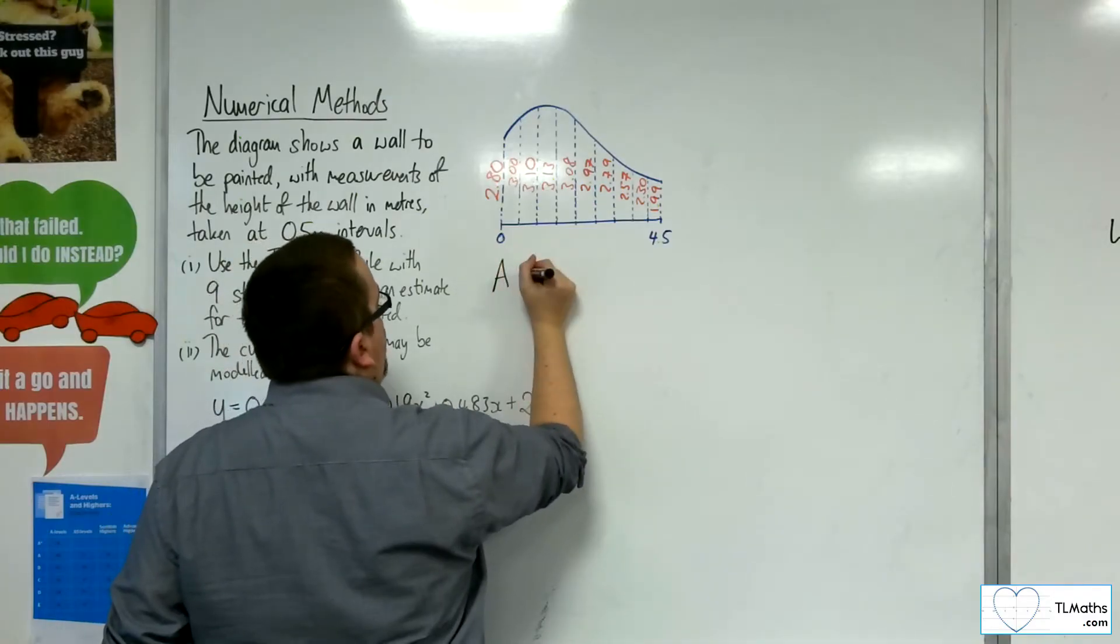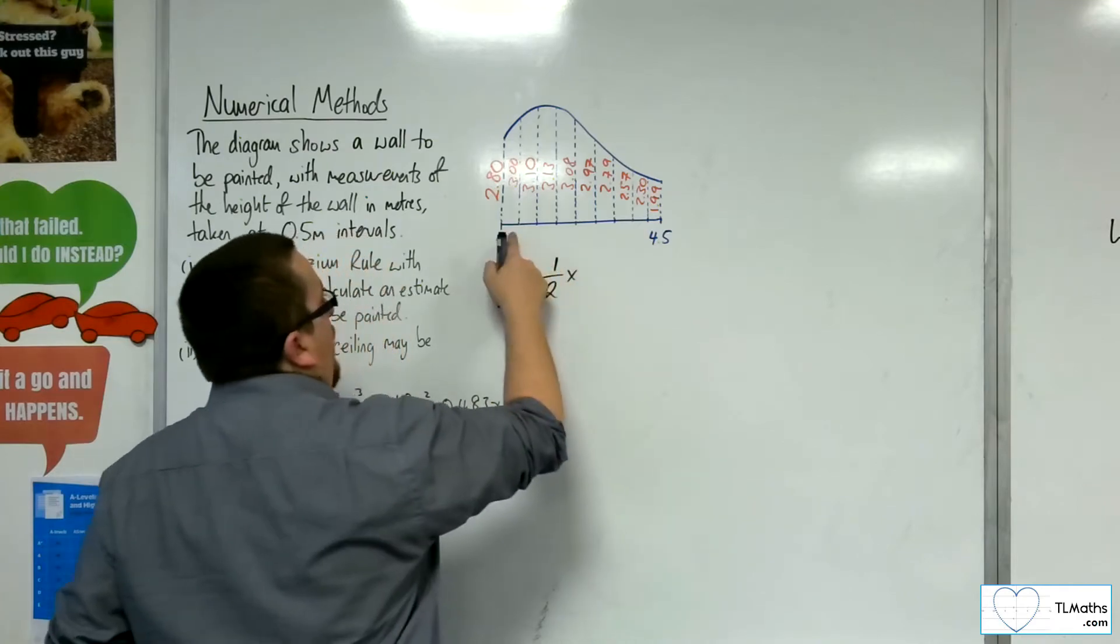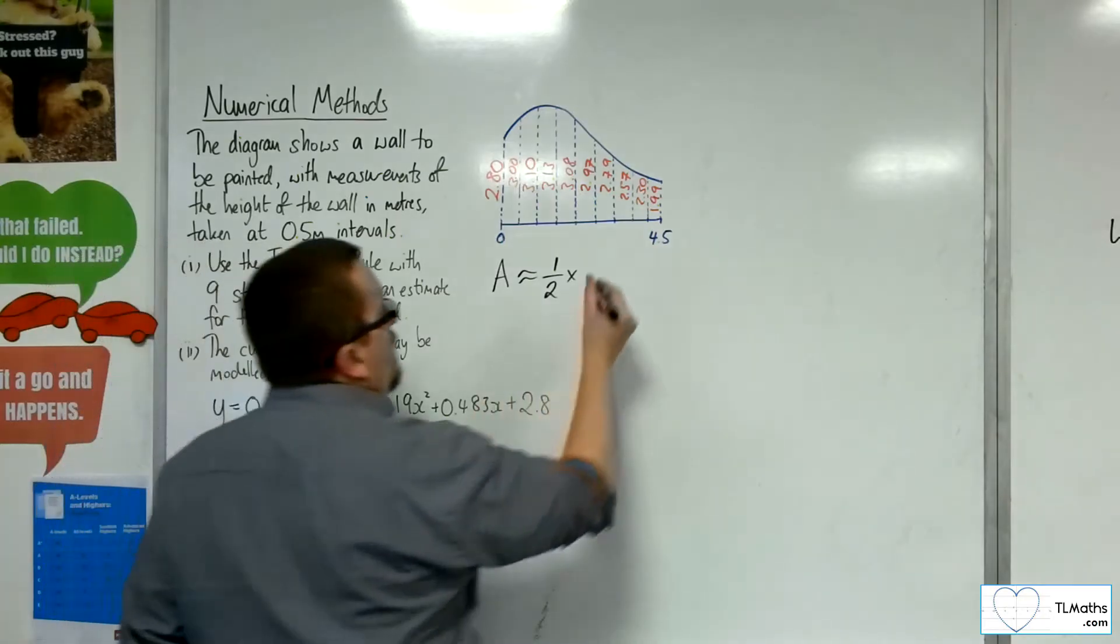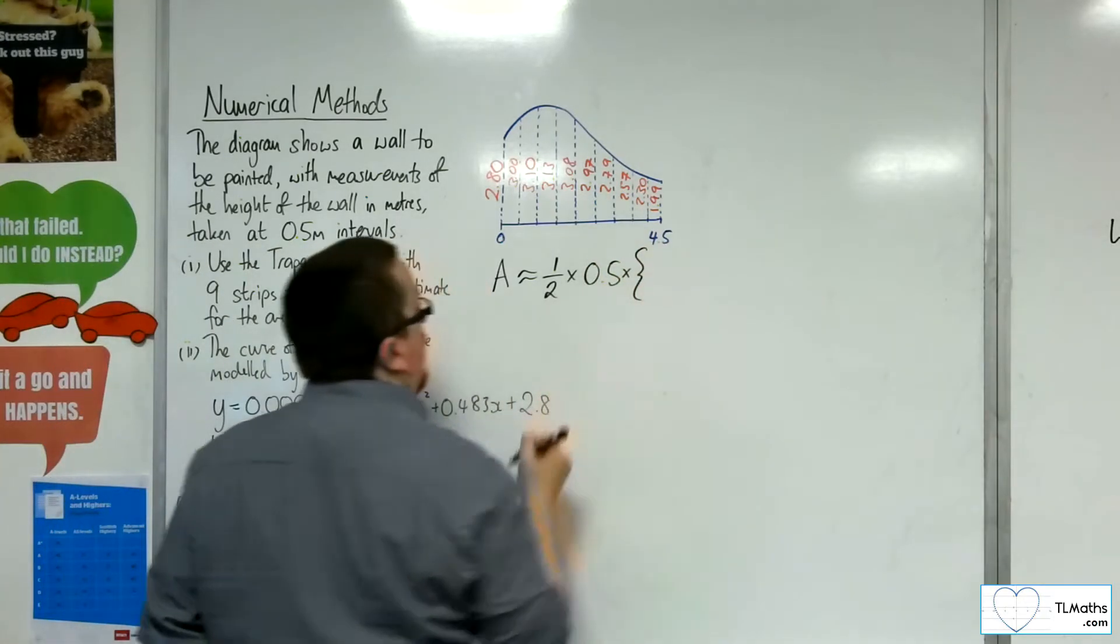The area will be approximately 1.5 times h. Now h is the width of each strip, and we know that's at 0.5 meter intervals. Times by, open the bracket.